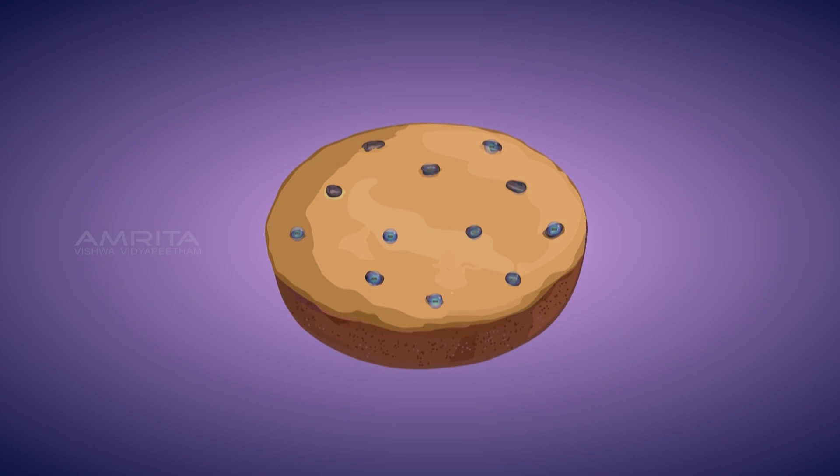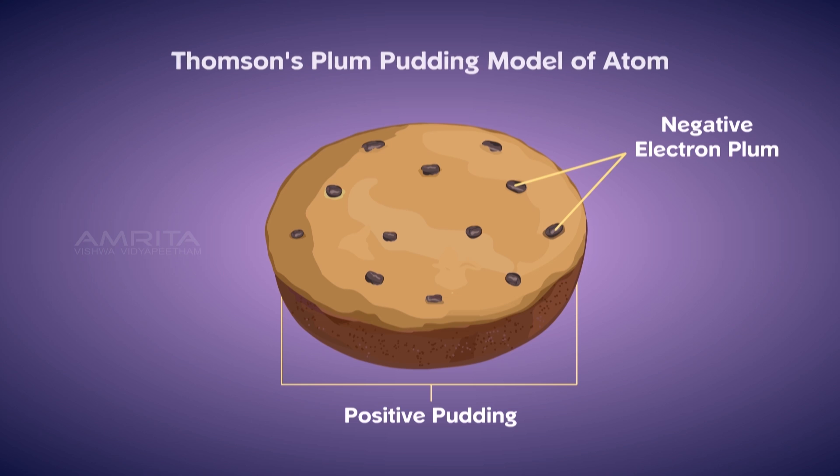The model of an atom proposed by Thompson is similar to a Christmas pudding. In this model, electrons are arranged in a sphere of positive charge like plum in the spherical Christmas pudding. So it is called plum pudding model of an atom.